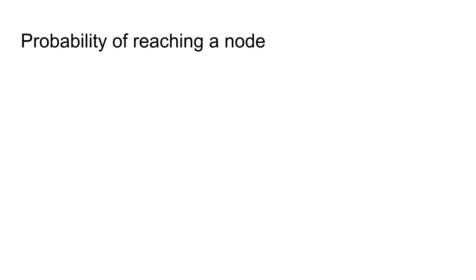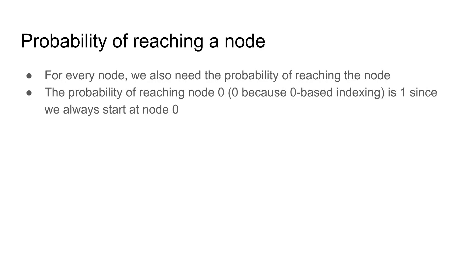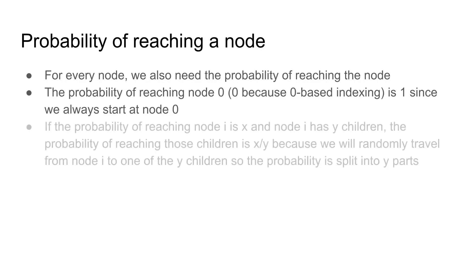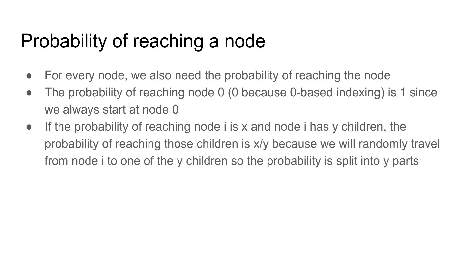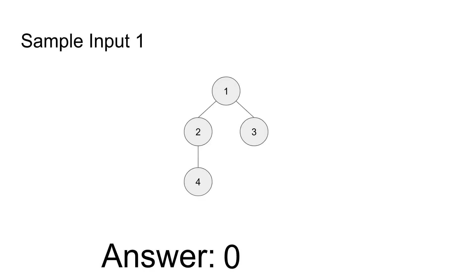Now we need to find the probability of reaching each node. The probability of reaching node 0, which is the root, is 1, because we always start there. If the probability of reaching a node is x and the current node has y children, then this probability x is split equally among the y children. So the probability of reaching each child is x divided by y. We can also use DFS to solve this.